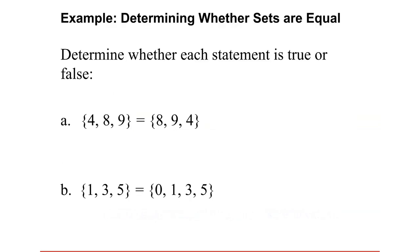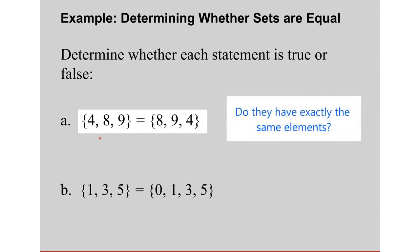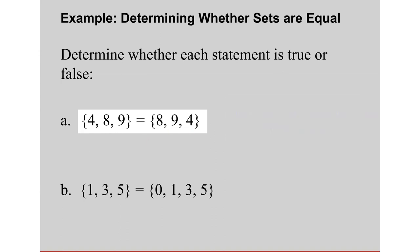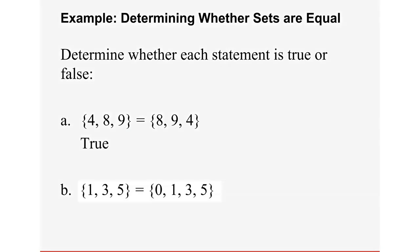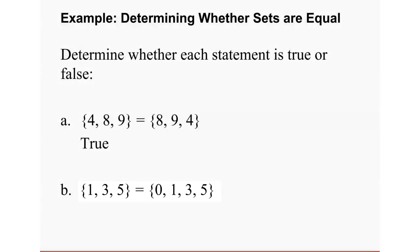Let's determine whether the following statements are true or false. Are these two sets equal? Do they have the same number of elements? Yes. Are the elements exactly the same regardless of order? Yes — order does not matter. Therefore, this is true; both sets are equal. For the next example, the two sets are not equal because one set contains zero while the other does not, and they have different numbers of elements — three versus four. Therefore, these two sets are not equal, so this is false.